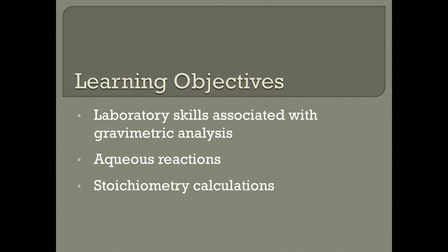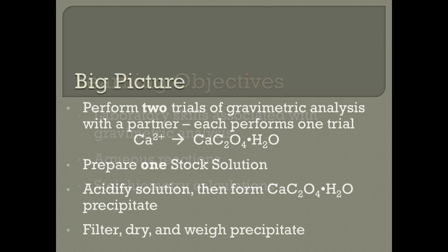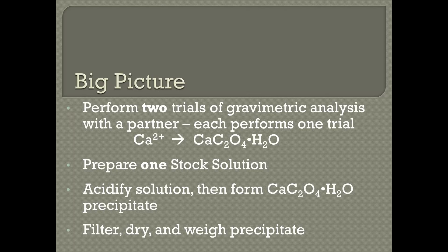Today's gravimetric analysis will involve calcium by forming and isolating calcium oxalate hydrate. You'll do this by working with a partner and each of you will perform one trial, resulting in two trials total. First you'll need to prep one stock solution of your unknown, and then you and your partner will each use 25 milliliters of this solution.